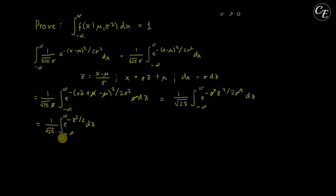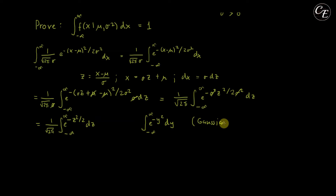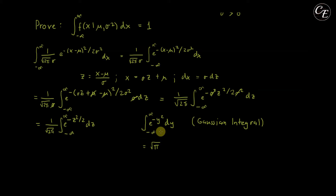Now, this integral is similar to a Gaussian integral. Let me show you the Gaussian integral using variable y. This is the Gaussian integral: the integral of e raised to negative y squared, dy, from negative infinity to positive infinity. If you evaluate this integral, you will get square root of pi. If you are unclear about this, I have a video that shows how to integrate this and shows that the value is square root of pi. The link is in the description below so you can check it out.